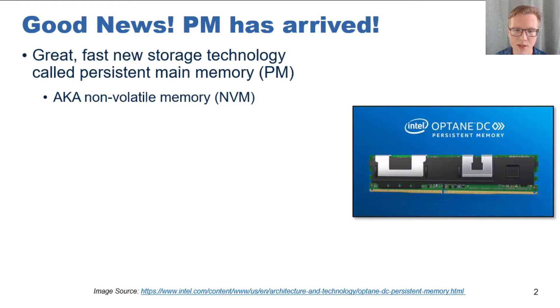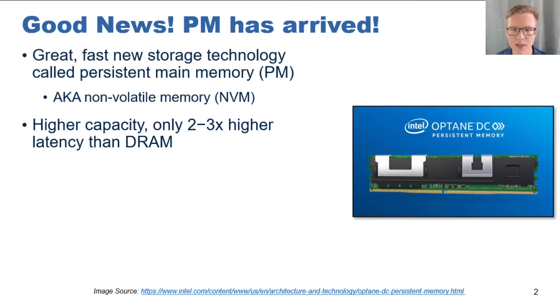Intel has made persistent main memory commercially available. This is a higher capacity main memory technology which resides in the memory bus alongside traditional DRAM, providing a large pool of memory at only 2-3 times higher latency.